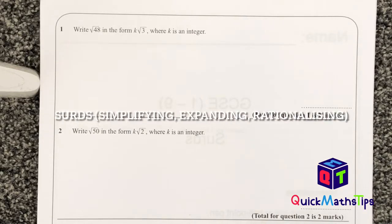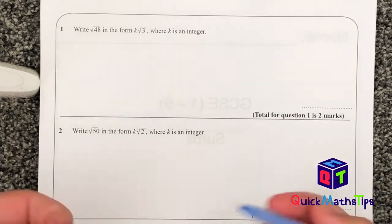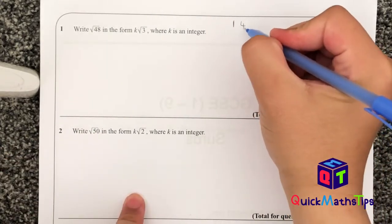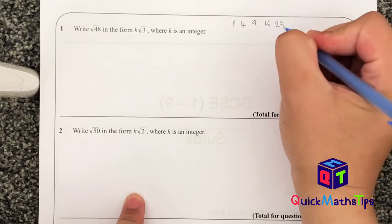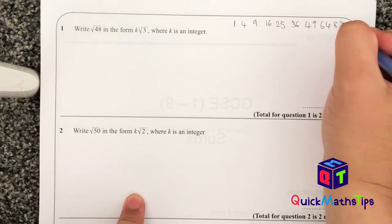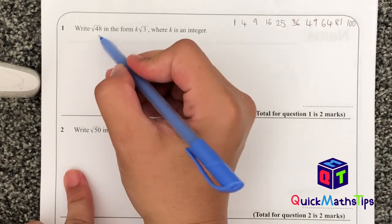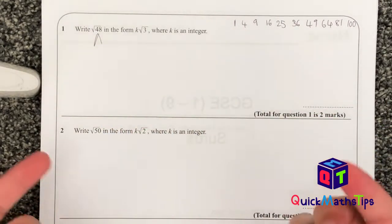Today I'm going to go through surds. When it comes to simplifying surds, we need to know our square numbers really off the top of our head. I'm going to write out my square numbers: 1, 4, 9, 16, 25, 36, 49, 64, 81, and 100. You need to know your square numbers really well. You also need to know how to do factor trees.